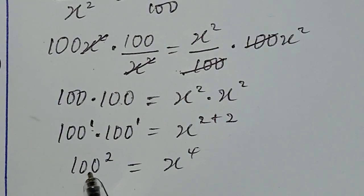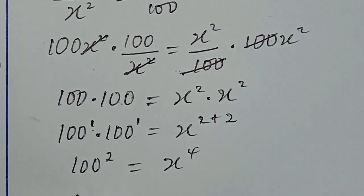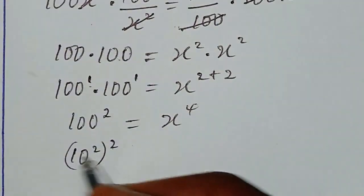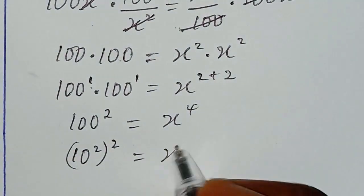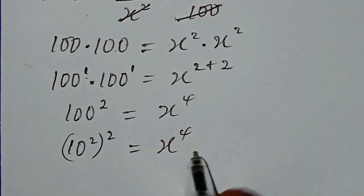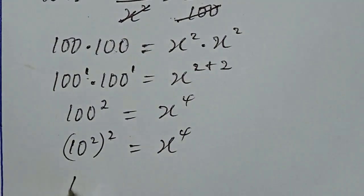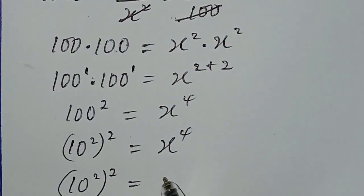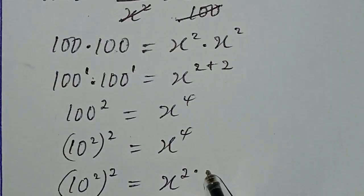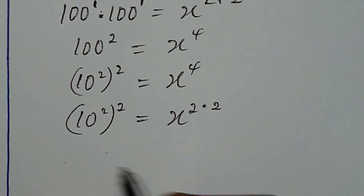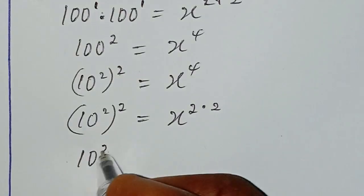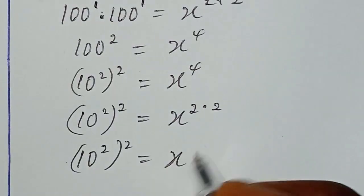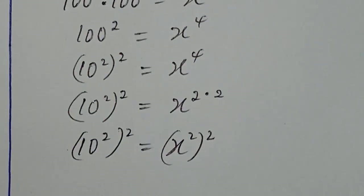From here we can simplify the left hand side. We have 10 to the power of 2, then in brackets to the power of 2, equal to x to the power of 4. Likewise we can write the right hand side as x to the power of 2, in brackets to the power of 2. So we have: (10²)² equal to (x²)².